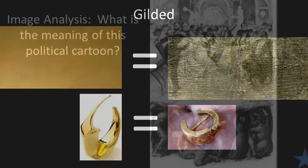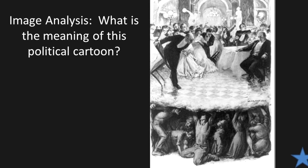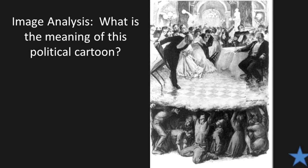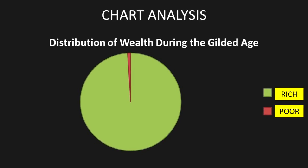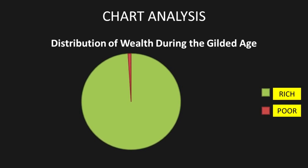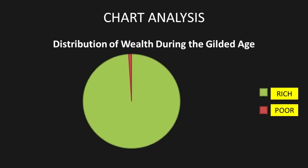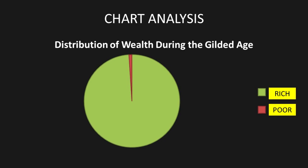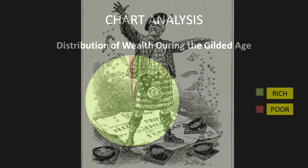The next image analysis asks: what is the meaning of this political cartoon about the Gilded Age? Then we have our first chart analysis — this is the distribution of wealth during the Gilded Age. Does this seem fair? Of all the money being made in the United States during the Gilded Age, look where most of it goes — to very few rich people. But what about the millions of people who are poor?